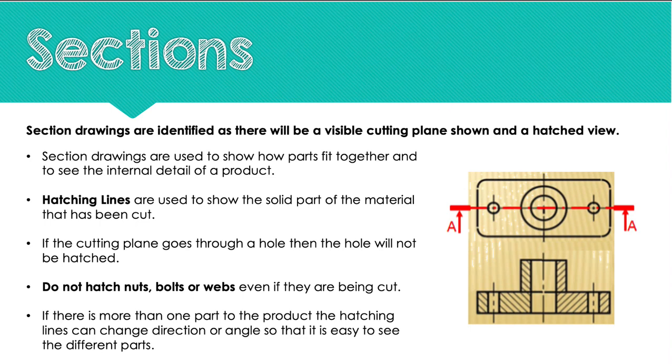The last thing that we're going to cover in orthographics is sections. Section drawings are identified as there will be a visible cutting plane and a hatched view. Previously we discussed the cutting plane line, and you can see that that is here on the drawing. Section drawings are used to show how parts may fit together or to see the internal parts of the product. We would use what's called hatching lines, which is these diagonal lines here, and that shows that that material is solid. This line here shows that we've cut halfway through it. So all of this is solid, and then we've got areas here for our circles to show that there are holes going through it. We wouldn't hatch the holes because they are not the solid part of the material.